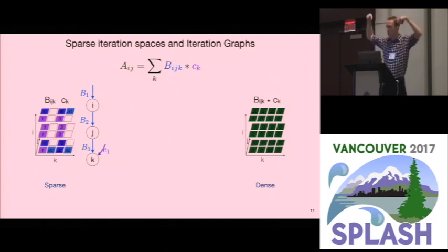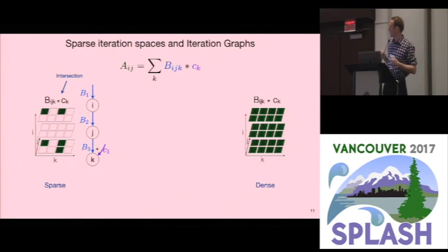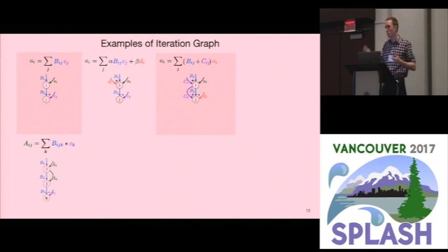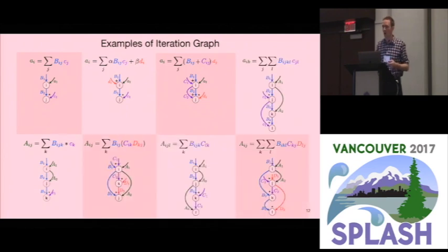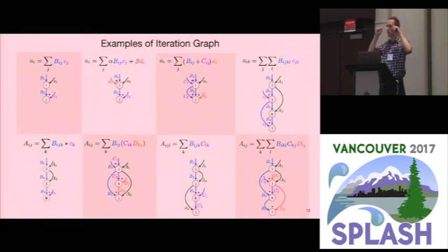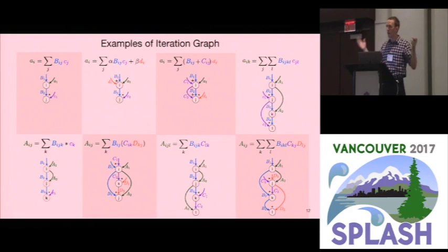I add in the dependency chain for A, the result, which does not impact the merge chain. This is one iteration graph, and our compiler automatically creates iteration graphs for any expression. These are some examples from tensor algebra, linear algebra, and block linear algebra. These iteration graphs give us the ability to break up the complexity of code generation level by level, one index variable at a time, making it feasible to generate code for any complex expression.